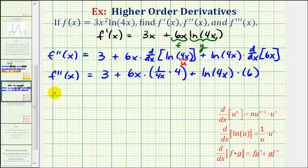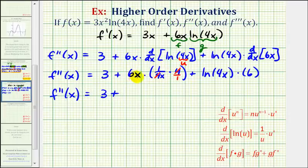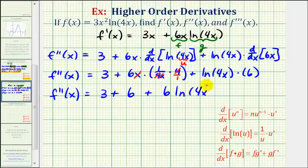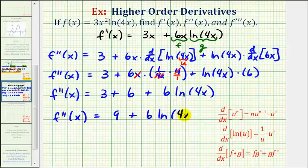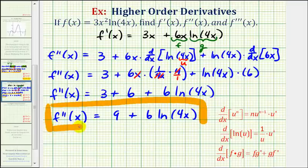Now let's simplify. This four and this four simplify to one, and six x times one over x — the x's simplify — so we're left with just six. Then we have plus six natural log four x. We can combine three and six because those are like terms, so f double prime of x equals nine plus six natural log four x. It might be tempting to add the nine and the six, but we cannot do this because the six is attached to the natural log by multiplication. So now we have our second derivative function, and to find the third derivative, we'll find the derivative of the second derivative.